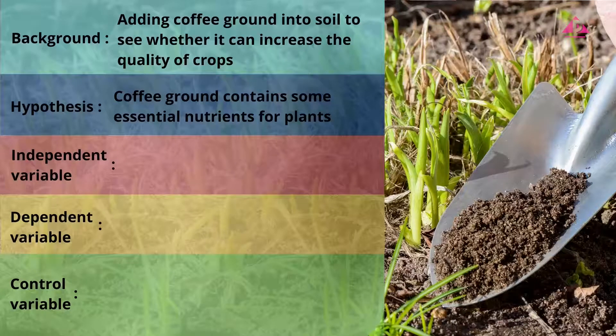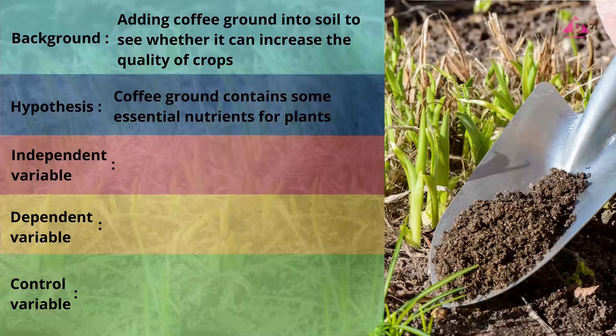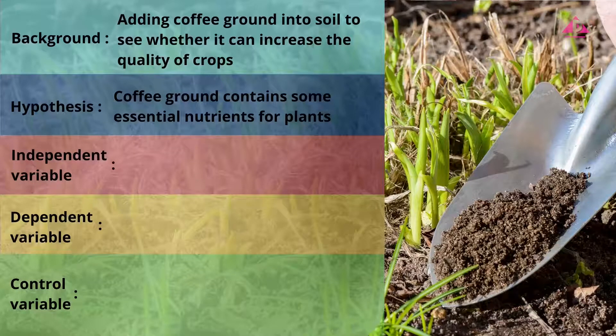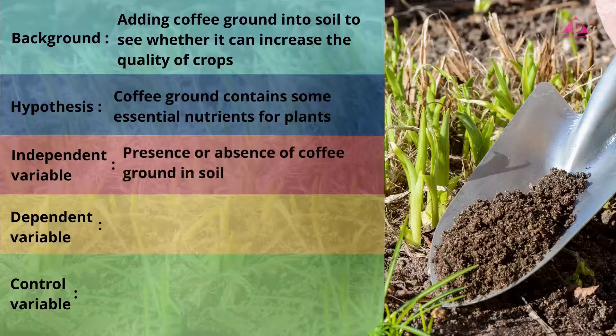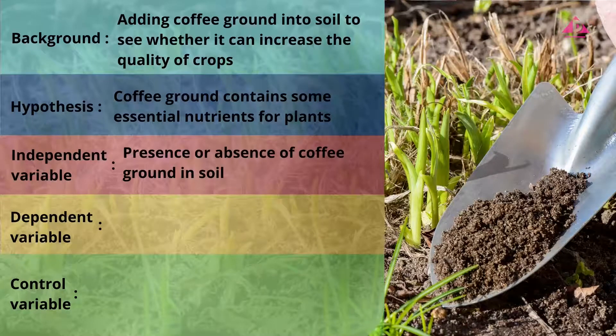Its hypothesis is, coffee ground contains some essential nutrients for plants. Also think about the difference between the two setups. The answer is the soil in both setups. One with coffee ground added, while the other doesn't. So, the independent variable is presence or absence of coffee ground in soil.